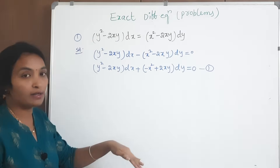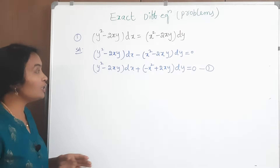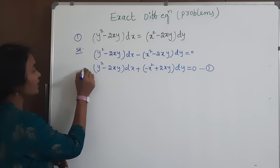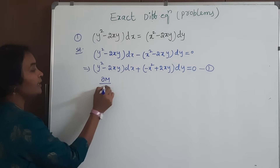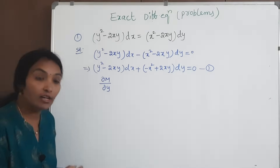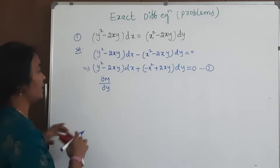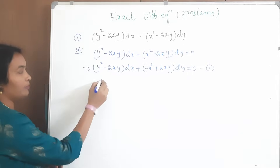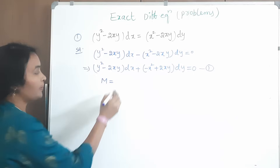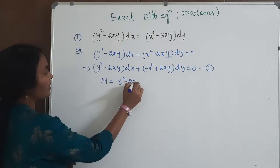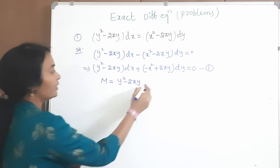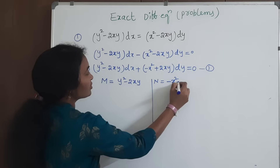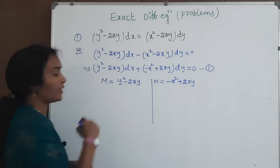Our job will start now. We need to check the exactness condition: ∂M/∂y = ∂N/∂x. What is our M? M is y² minus 2xy. And what is our N? N is minus x² plus 2xy.